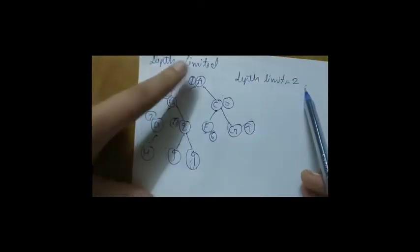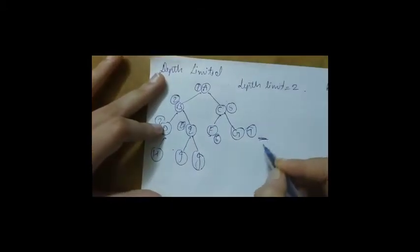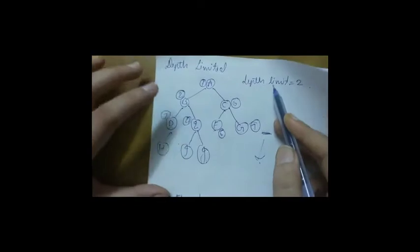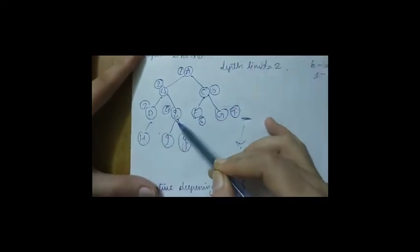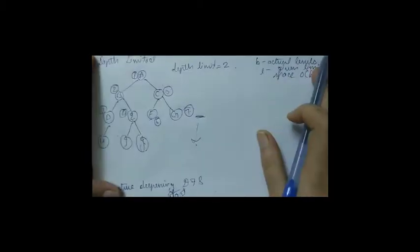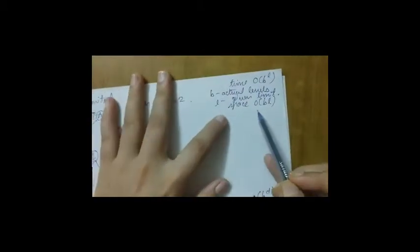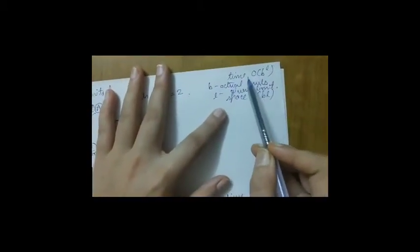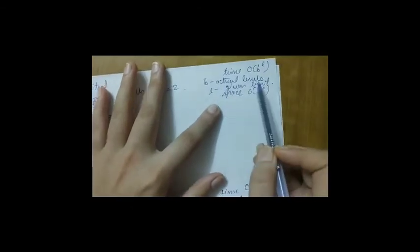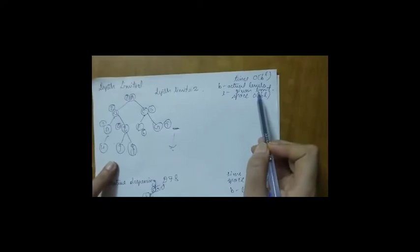Depth-limited search will explore only up to a specified level — say level 2 — and won't go to level 3. It finds all nodes at level 2 but does not expand them. The exploring sequence is: A, B, D, E, then C, F, and G. Time complexity is O(b^l) where b is the branching factor and l is the given limit. Space complexity is O(b × l).